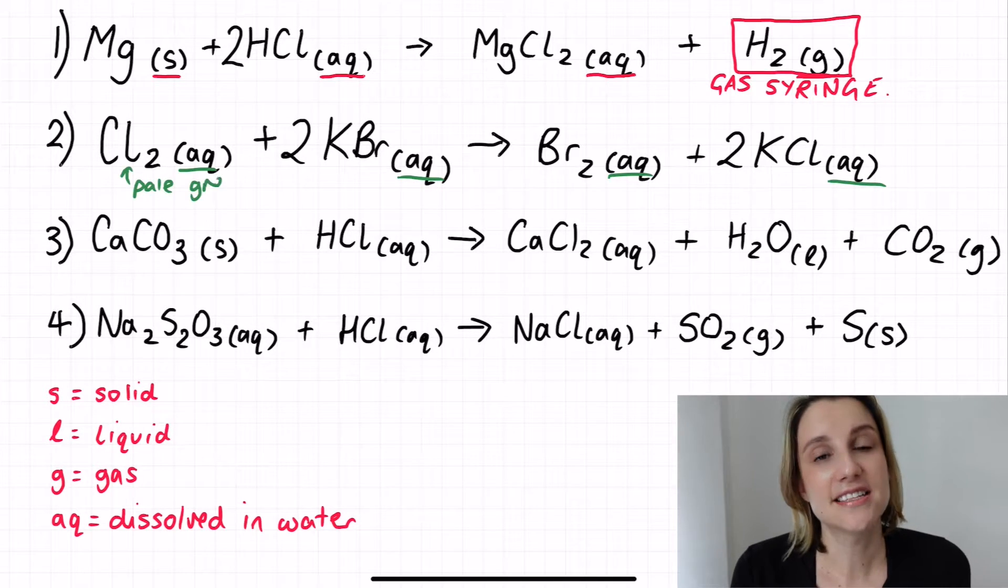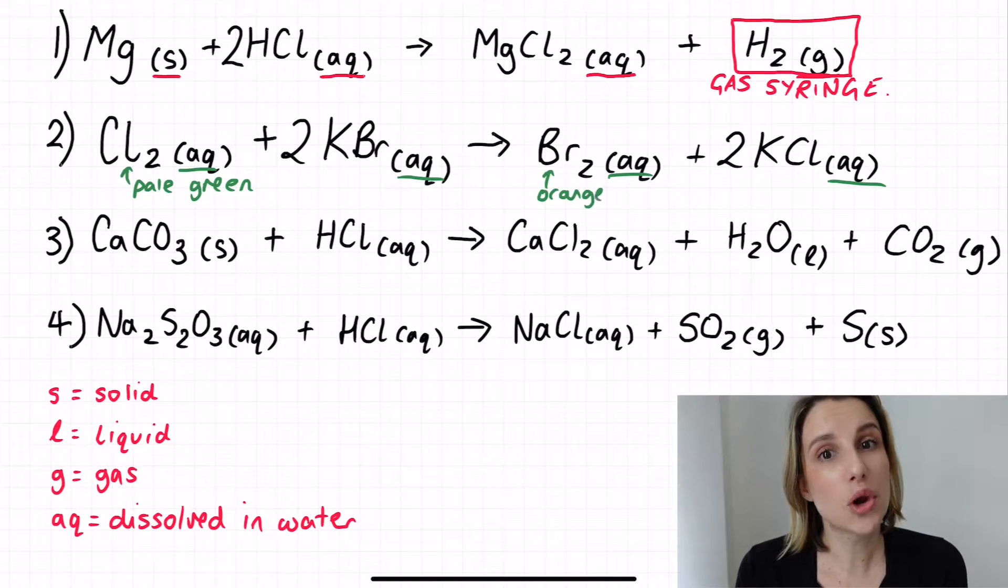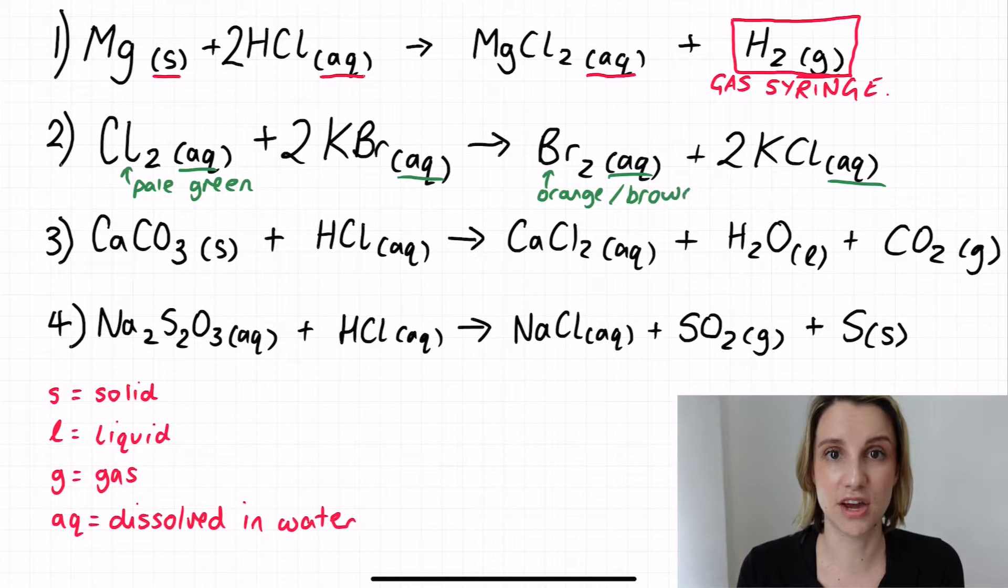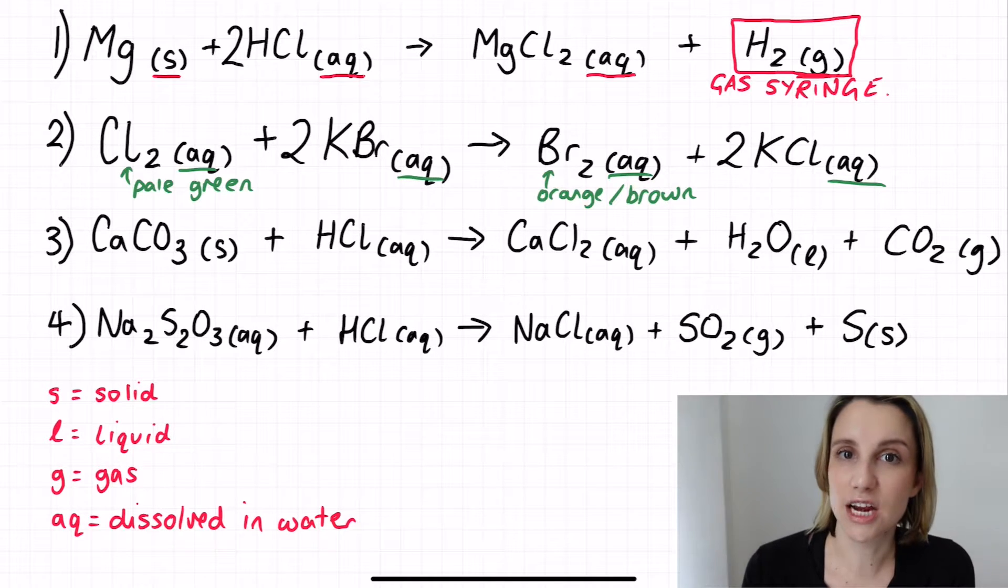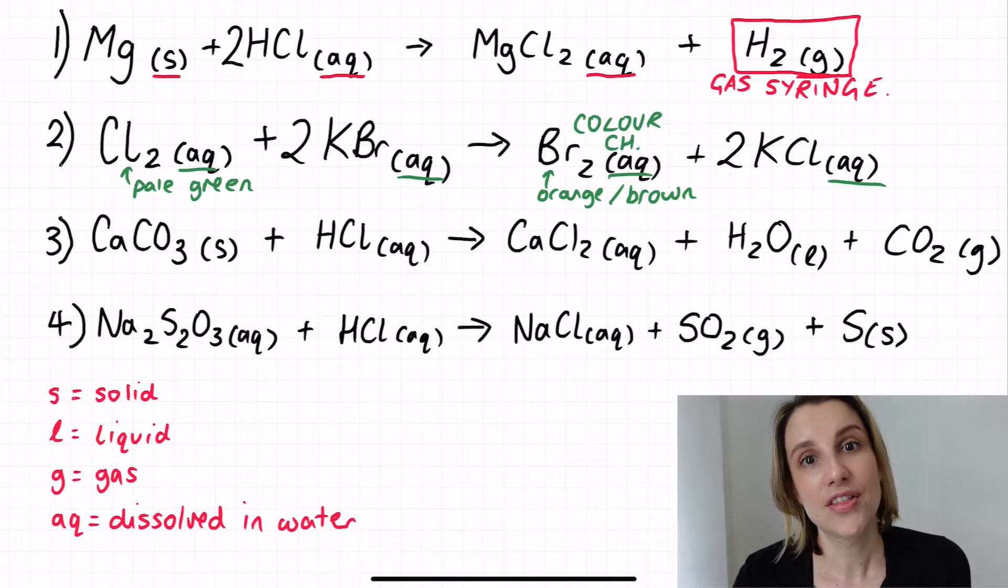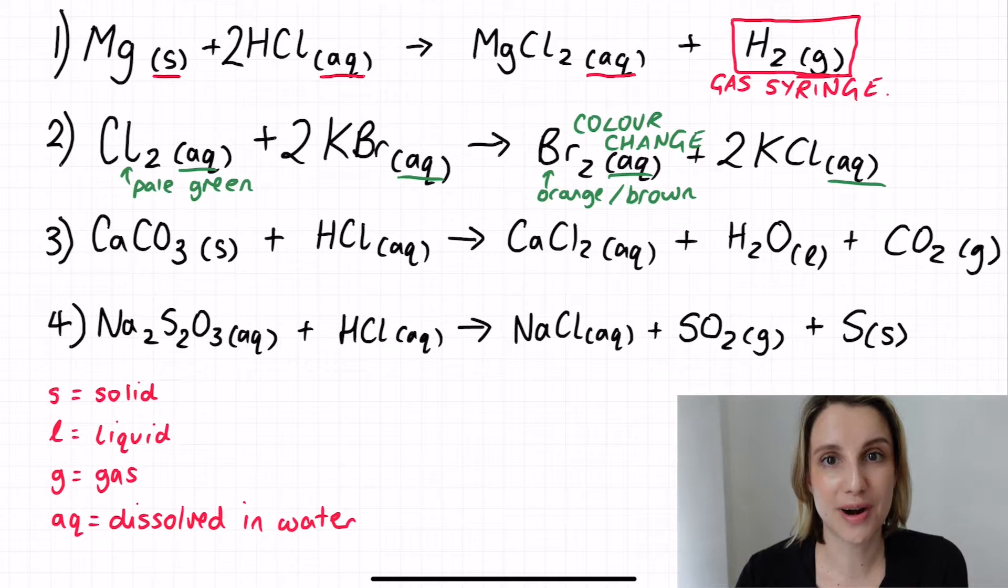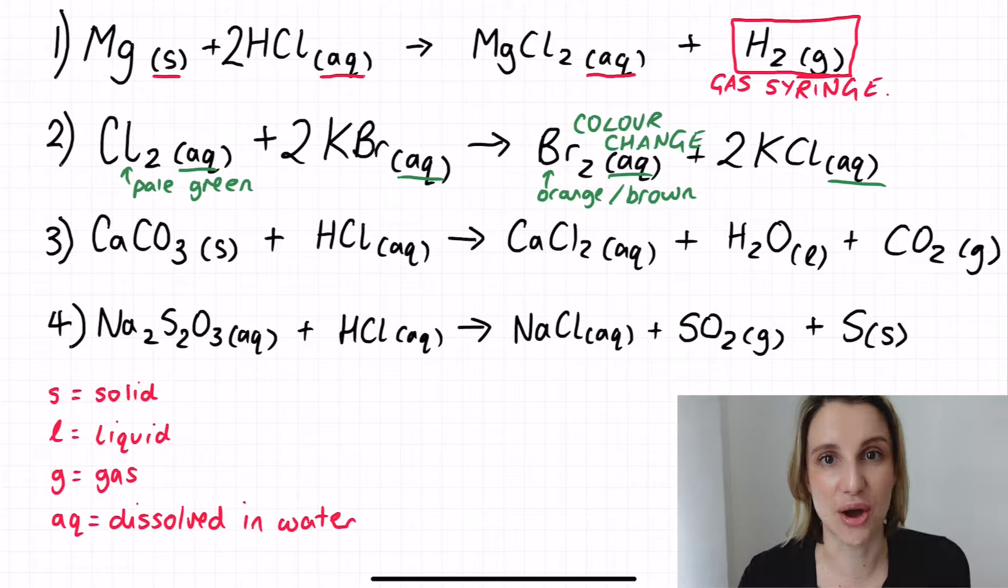In this case I can see I've got halogens and I know that halogens are colored. So the chlorine on the left hand side of the equation is kind of like a pale green color, whereas the bromine that's being produced on the right is going to be more of an orangey brown color. So what I can do is I can monitor how quickly the color changes from that pale green to that orange brown and that'll tell me how fast the reaction is going.